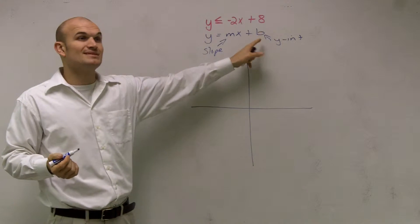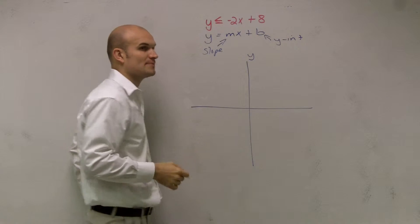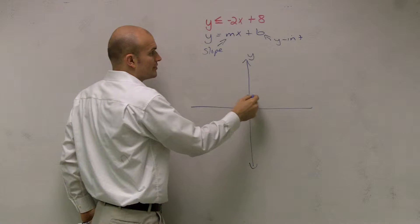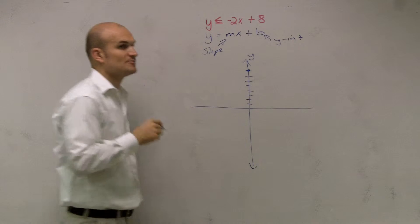Your y-intercept is going to be exactly the same. Since my y-intercept is 8, remember the y-intercept is where the graph crosses on the y-axis. So I go up to 8: 1, 2, 3, 4, 5, 6, 7, 8, and make a nice big dot.